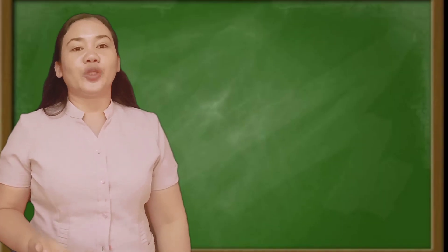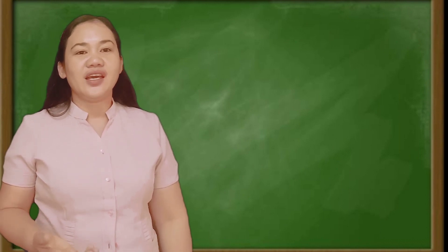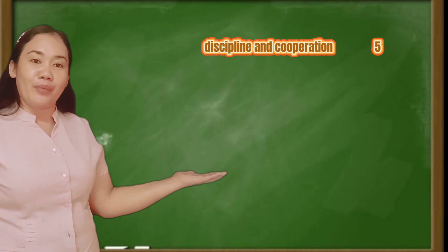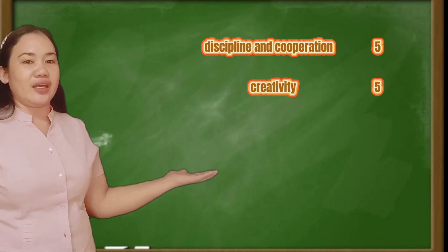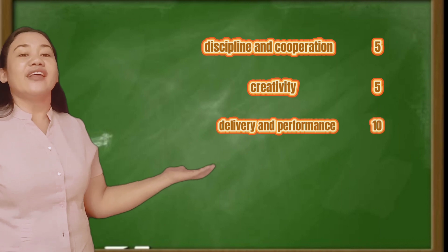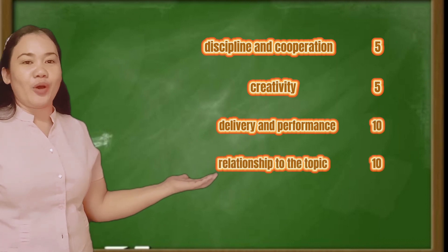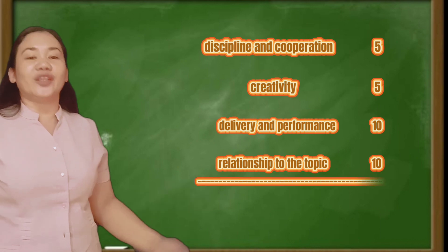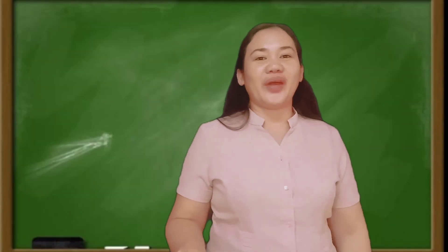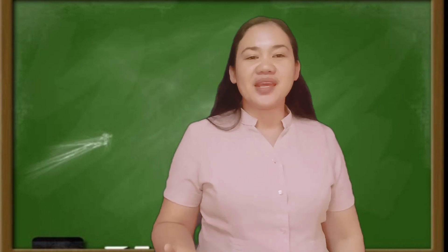Here's your rubric that will serve as your basis in doing your activity. Discipline and cooperation: 5 points. Creativity: 5 points. Delivery and performance: 10 points. Relationship to the topic: 10 points, with a total of 30 points. Are you ready, children? Do this in 10 minutes.